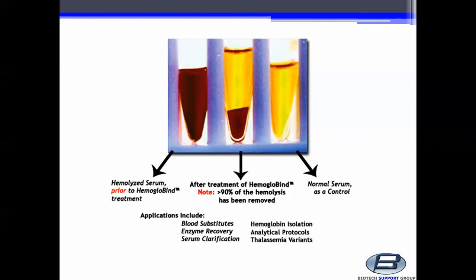Compare this with the normal serum as a control. Applications of hemoglobin include blood substitutes, enzyme recovery, serum clarification, hemoglobin isolation, analytical protocols, and thalassemia variance research.